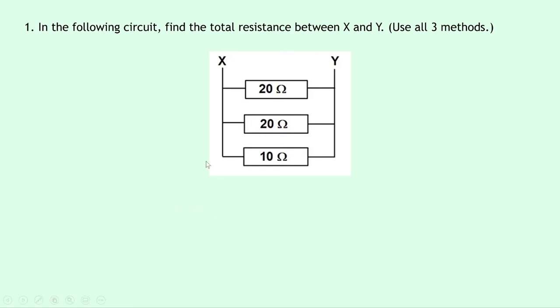Question one says: in the following circuit, find the total resistance between x and y, and then it says to use all three methods. So I'm going to show you three methods of how you can calculate the total resistance of resistors connected in parallel. The first thing to notice is we've got x and y here, so we want to find the total resistance using these three parallel resistors.